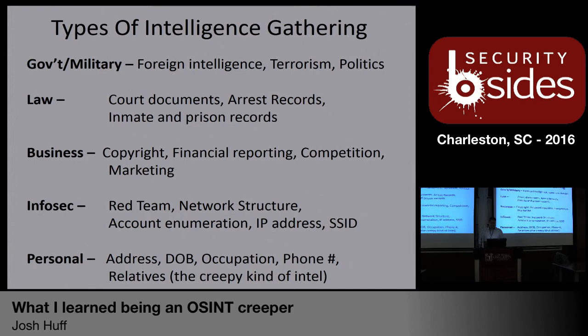Some things that other groups would be interested in for open source intelligence gathering: government and military, obviously — there's foreign intelligence, terrorism, and politics. Law will have court documents, arrest records, inmate and prison records. Businesses are interested in copyright information, financial reporting, competition, and marketing. In security, the red team is going to be looking for network structures, account enumeration, IP addresses, and SSIDs. Then you get into the personal stuff: addresses, date of birth, who you work for, who your family is. That's the creepy stuff, and that's what I'm going to cover mostly today.